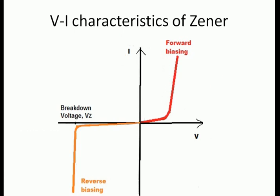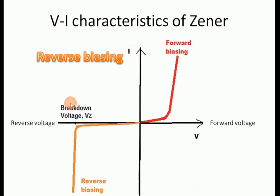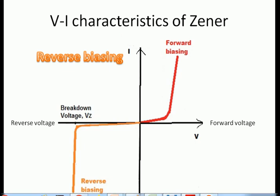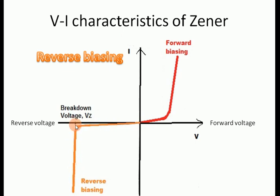Moving on to the reverse characteristics of the Zener diode: when reverse voltage is applied, as we increase the reverse voltage, a small current will increase — that is known as leakage current, which is due to thermally generated minority carriers. As we continue increasing the reverse voltage, a point will occur where the junction breaks down, and at this point the current will increase sharply. This point or voltage level is known as the breakdown voltage, or Zener voltage Vz.